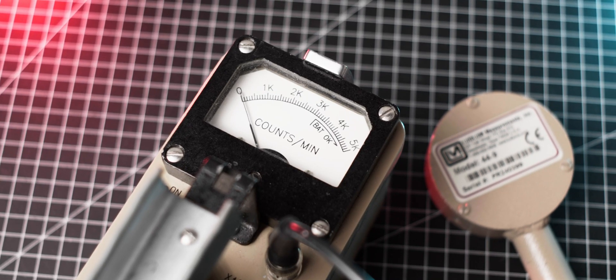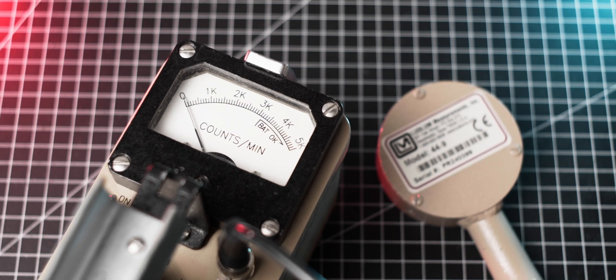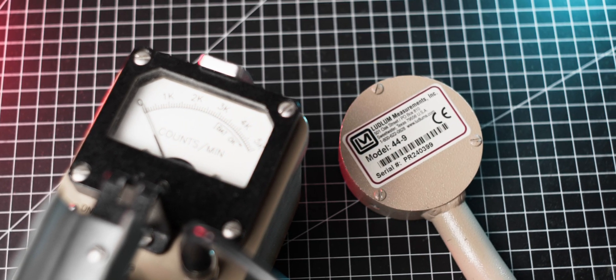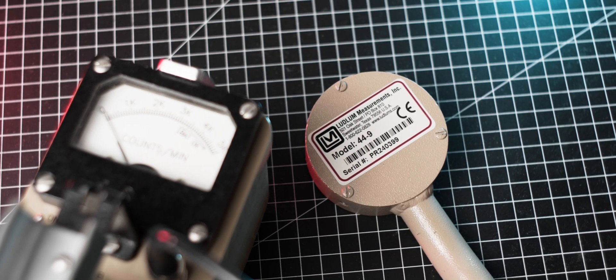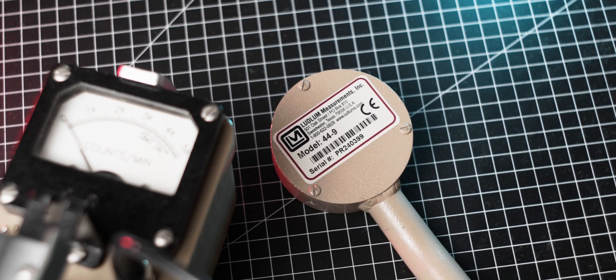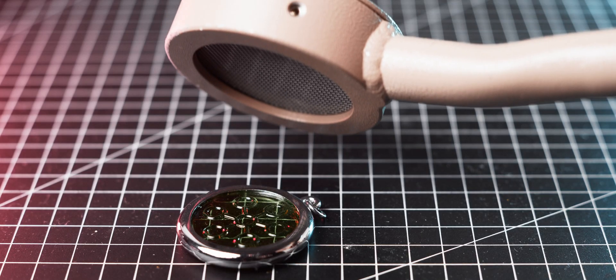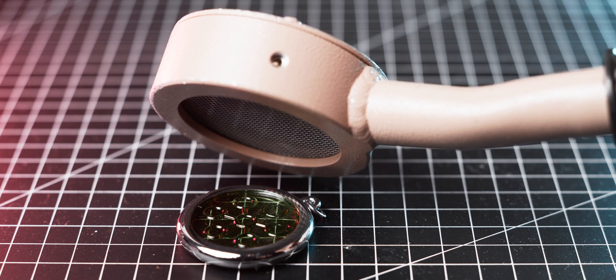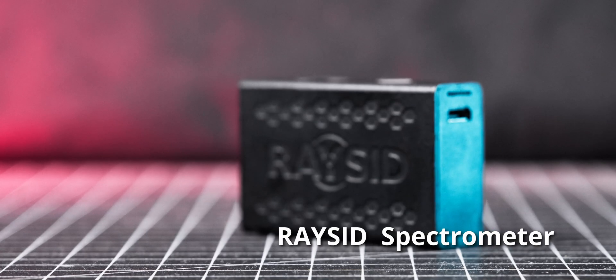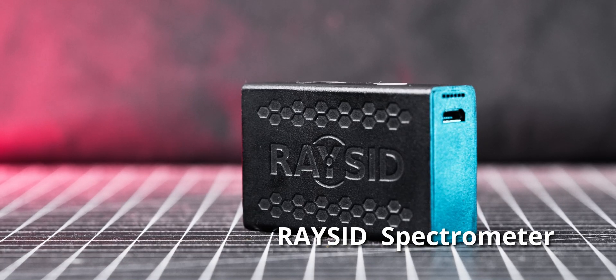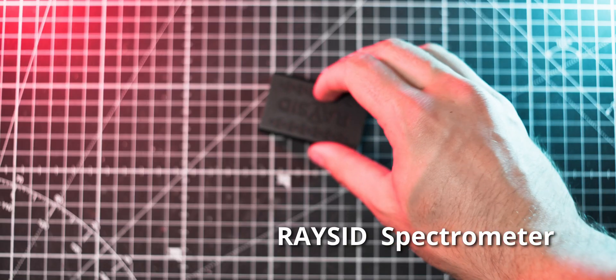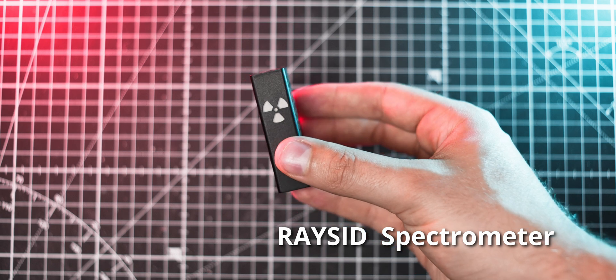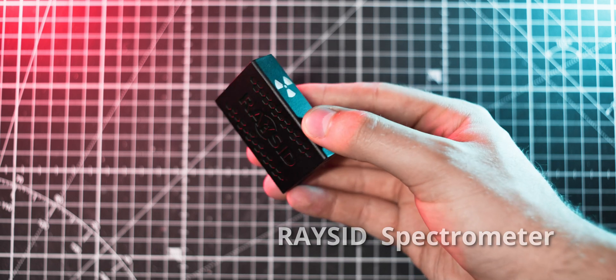Personally, I always try to give measurements in counts per minute, which I get on my Ludlum Model 3 meter with a 44-9 probe attached to it at 1 cm distance from the source. This way, I can ensure that the results are accurate, consistent and comparable between different tests. Sometimes, I also include a dose rate in microsieverts per hour, which I measure using my Radiacode gamma spectrometer, which factors in the different gamma energies of isotopes being detected.